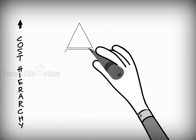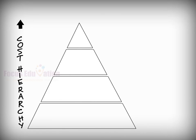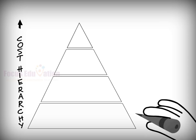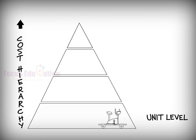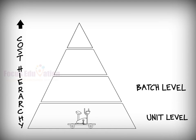This requires the managers to understand a classification system, called the cost hierarchy, to establish activity-cost pools. The four categories of activity costs in this hierarchy is determined by the underlying factor that drives its costs. It shows the activities and costs incurred for every unit, number of units produced in a batch, for a particular product, and for facility upkeep.